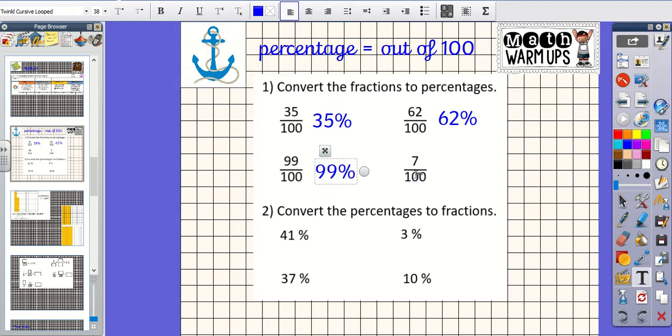So 99 hundredths, 99%. And then 7 hundredths would be 7%. Okay, so that was our fractions to percentages and now we are going to do the opposite. So converting the percentages to fractions.